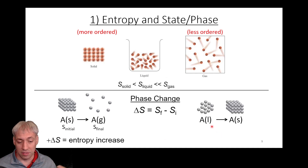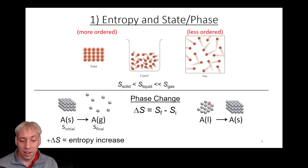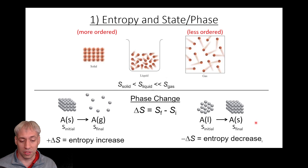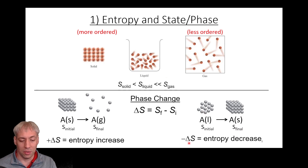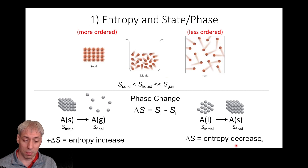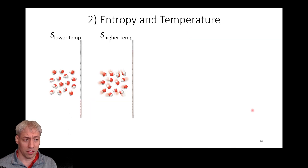In contrast, if you want to freeze something — going from a liquid to a solid — this goes from disorder to order. The system is becoming more ordered, giving you a negative ΔS. It's entropically unfavorable. The disorder goes down, so the final is more ordered than the initial, and this gives a negative ΔS value.